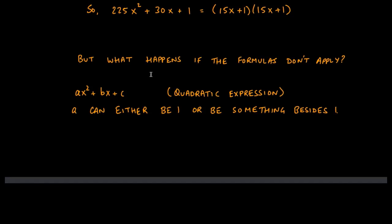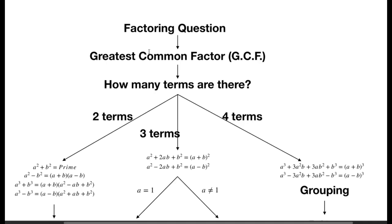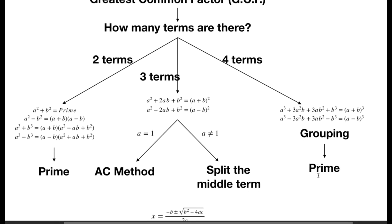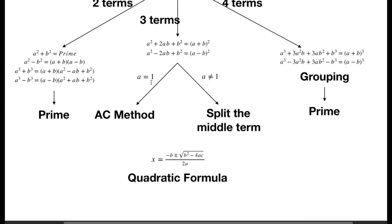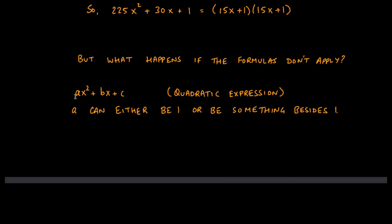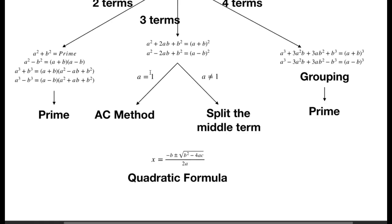What happens if we have a GCF, or worst case, we have three terms and neither formula works? The next thing we consider is: is a equal to 1? This a is the coefficient in ax² + bx + c — that's the standard form for quadratic expressions. This a can either be 1 or something besides 1, and that's what we're asking about when we say 'is a equal to 1?'